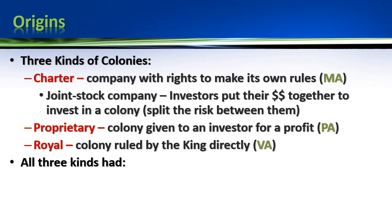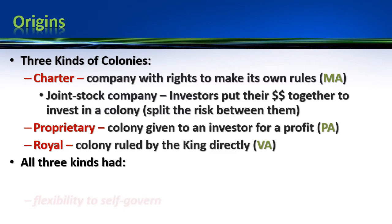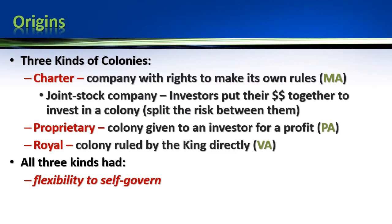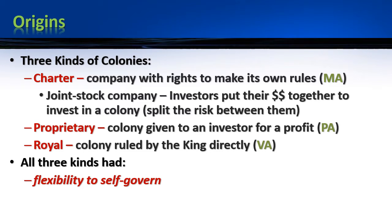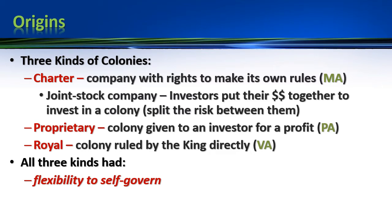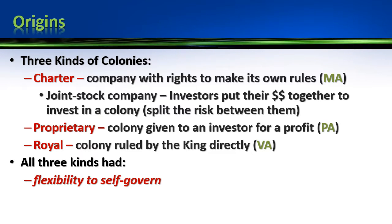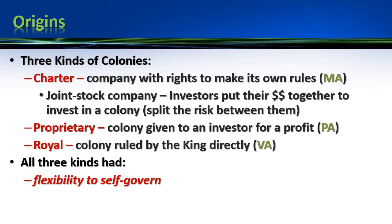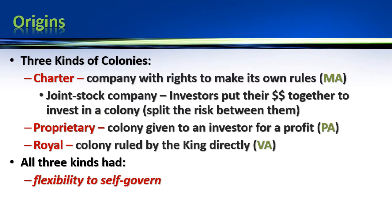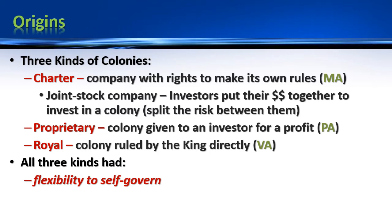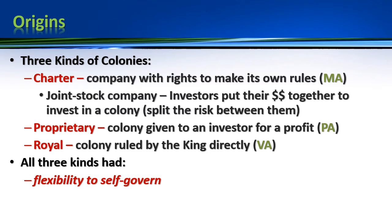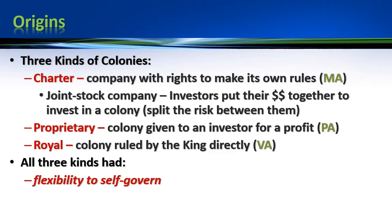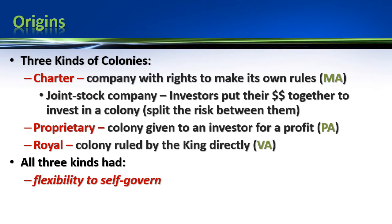In colonial America, it all ends up being pretty similar in the end, because each colony had a lot of flexibility to govern itself. Even a proprietary colony like Pennsylvania, controlled by William Penn, is able to make rules for itself because William Penn can't be everywhere in the colony at all times. The lords proprietors who own North and South Carolina aren't in the Carolinas at all times. So the colonists need the ability to govern themselves since England is six to eight weeks away.